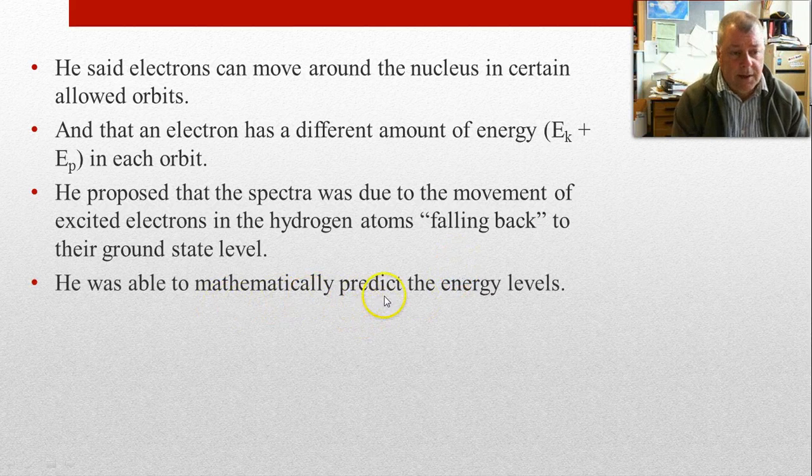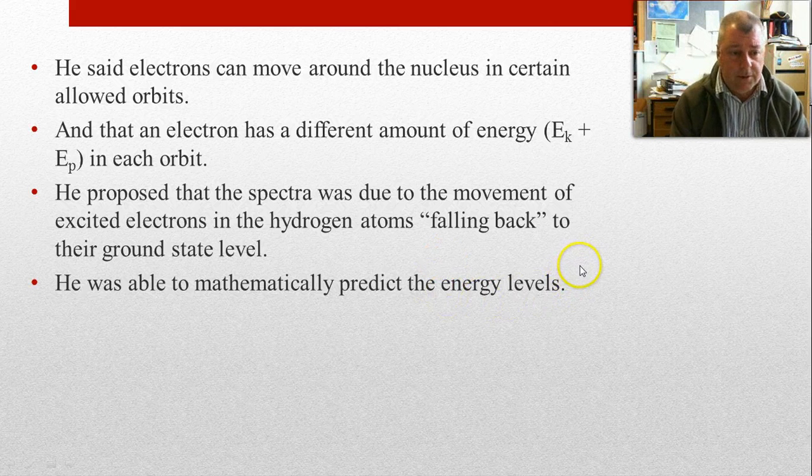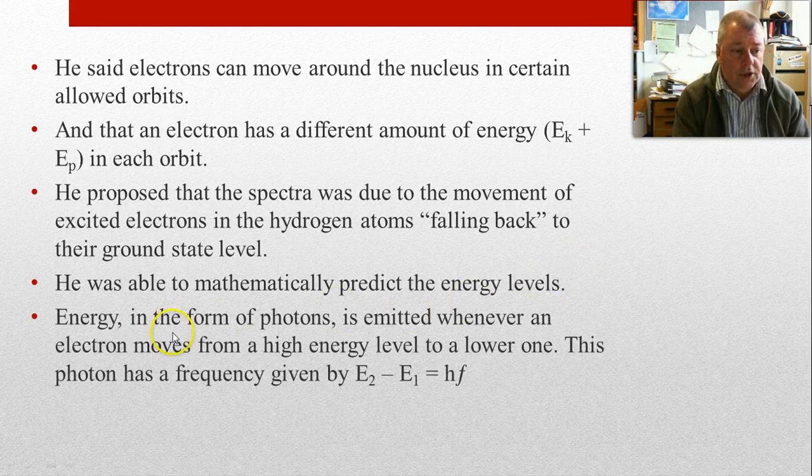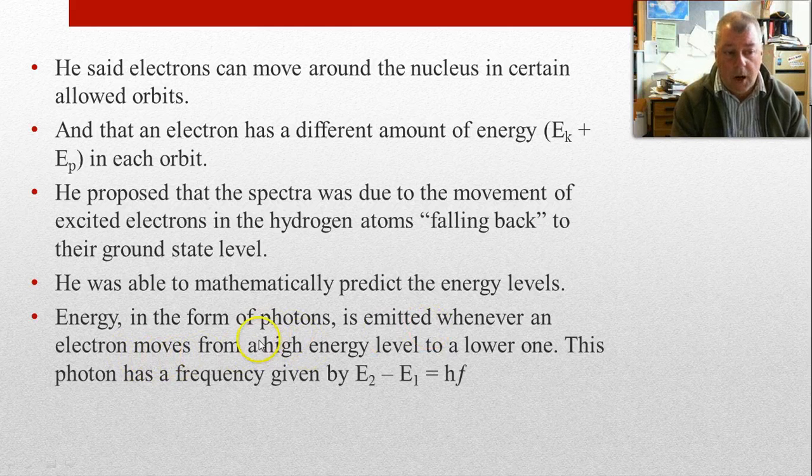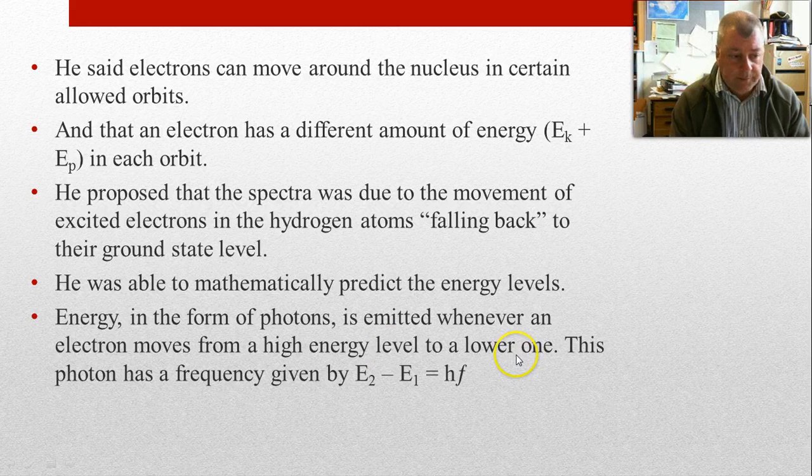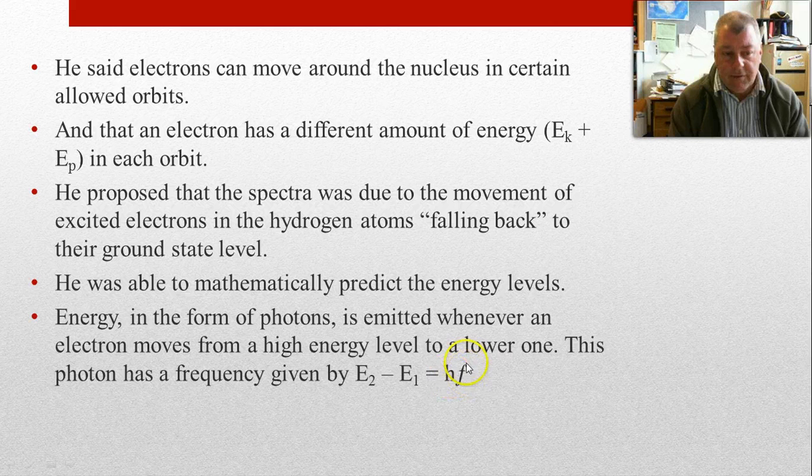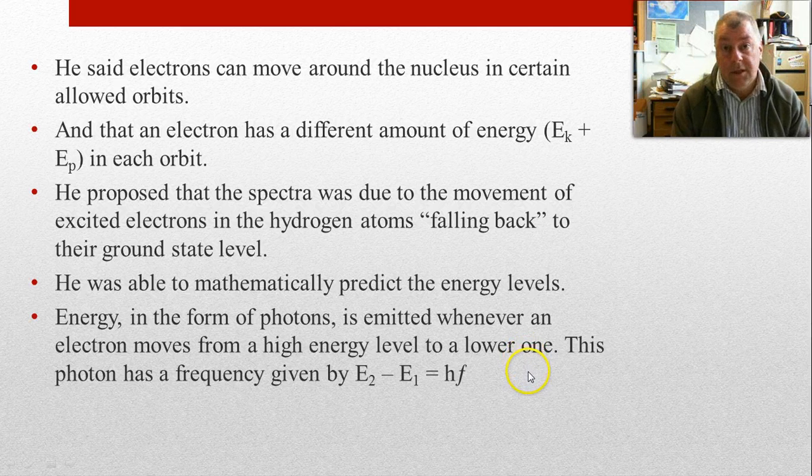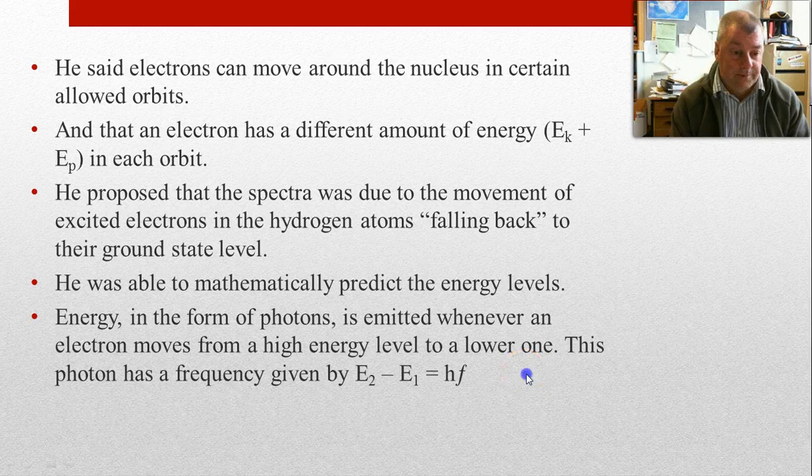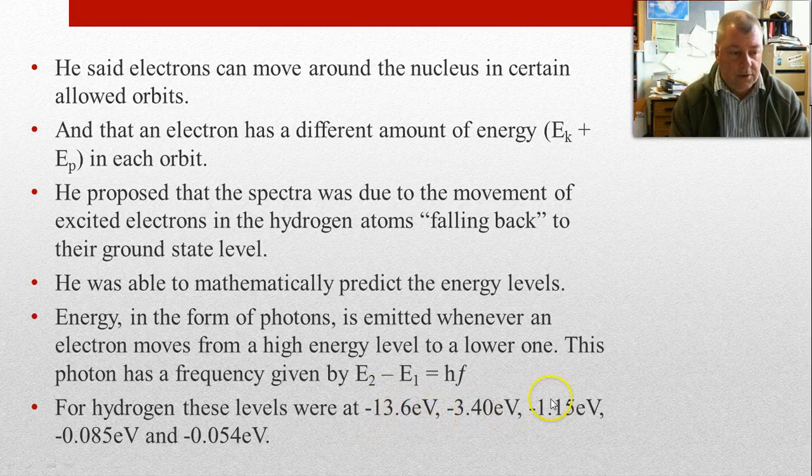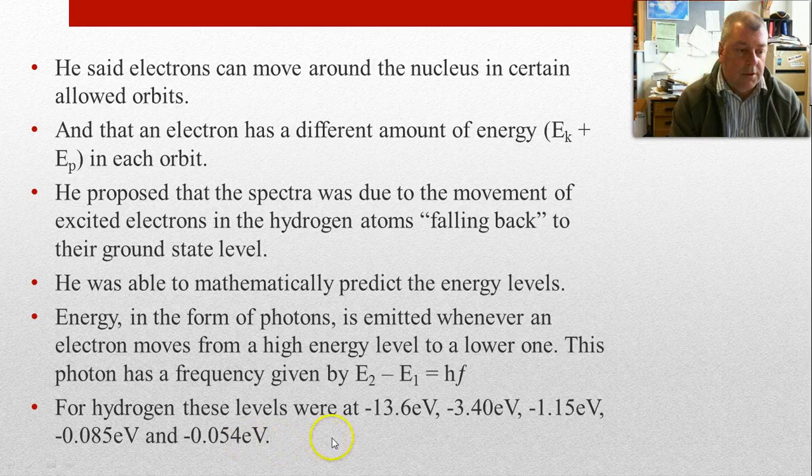Now, Bohr was able to mathematically project the energy levels, and he was able to write the formula for us, not only for hydrogen but for other elements as well. The energy in the form of photons is emitted whenever the electron moves from a high energy level to a lower energy level. The photon that's given off corresponds to the energy difference between the two energy levels, and you have hf. So you get a certain frequency of photon depending on the transition that occurs. That's why you only see certain lines on the spectra. For hydrogen, these levels are sometimes given in electron volts. There's one, two, three, four, five of them. They could also be written in joules as well.